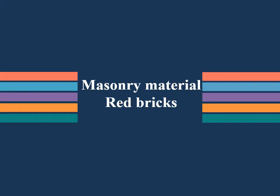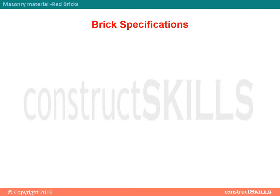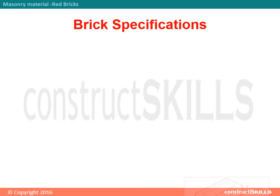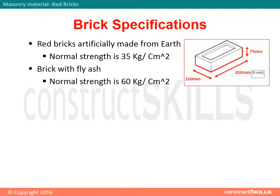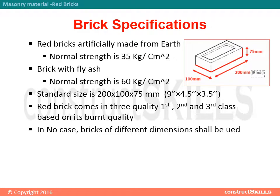Masonry material: red bricks. Red bricks are artificially made from earth; normal strength is 35 kilogram per centimeter square. Bricks with fly ash have a normal strength of 60 kilogram per centimeter square. The standard size is 200 by 100 by 75 millimeters. Red bricks come in three quality classes — first, second, and third — based on their burnt quality.